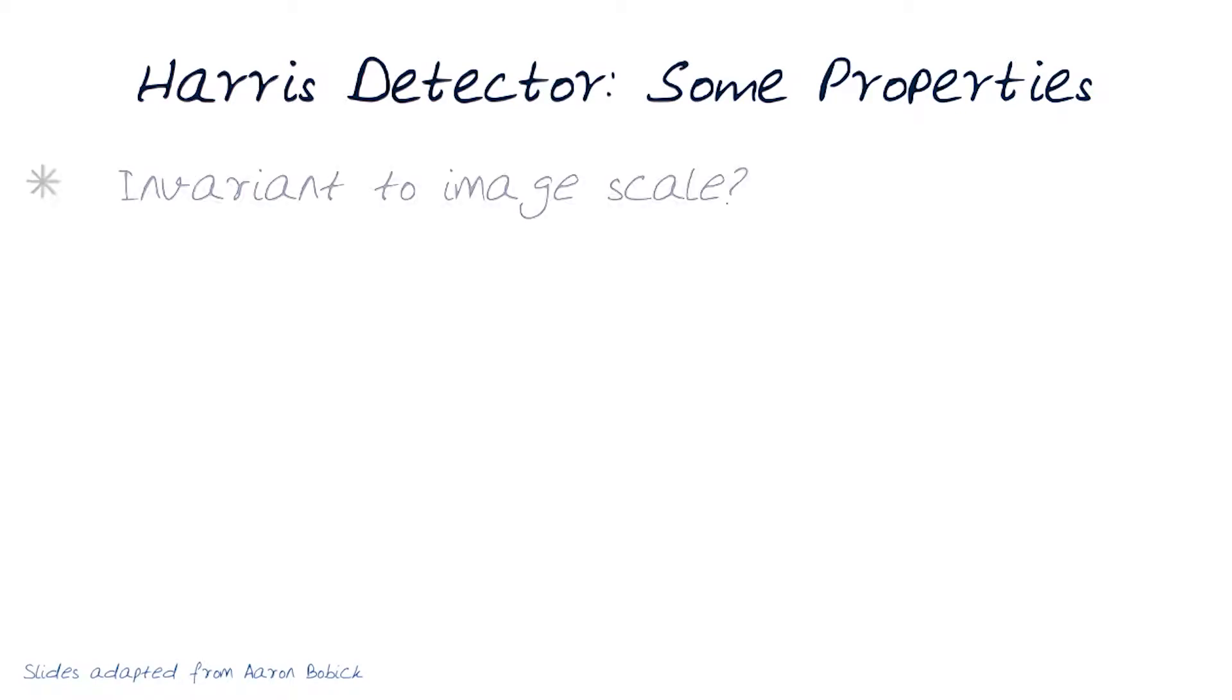Now let's look at a third property. Is it invariant to image scale? That is, the object has different scales in the multiple images.